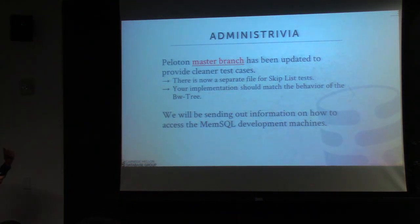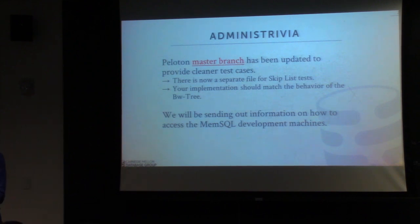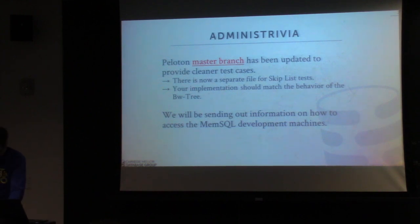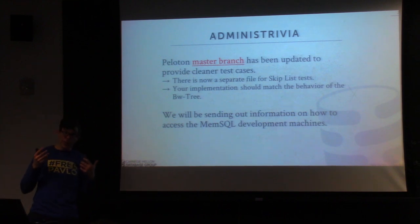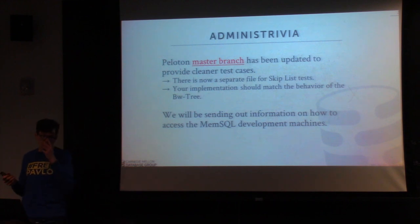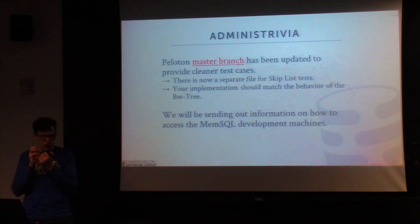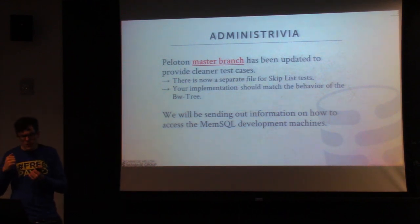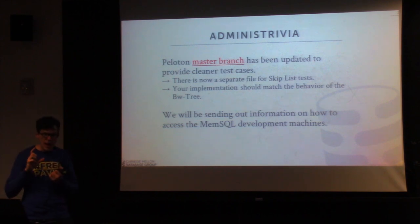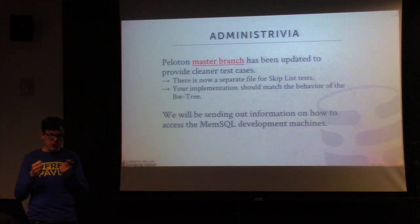Some administrative stuff: I sent an announcement yesterday that I had updated the master branch to now include a separation between the test cases for the skip list and the BW tree. So now there's a single test file called skip list index test that invokes the same sort of testing harness infrastructure that we have for the BW tree. So now you don't have to go muck around with the BW tree file at all — you just have a single test case that's for the skip list. Your skip list implementation should have the exact same behavior as the BW tree: same input, same output.